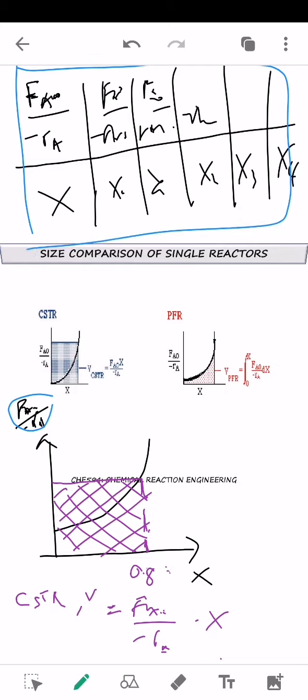Volume dia bersamaan dengan FA0 over negative RA darab X. Tapi kalau untuk PFR katalah sama juga you plot FA0 on the same graph katalah the same data tapi katalah the same reaction is re-added in PFR. So you nak kira how much volume PFR is required at 80% conversion.